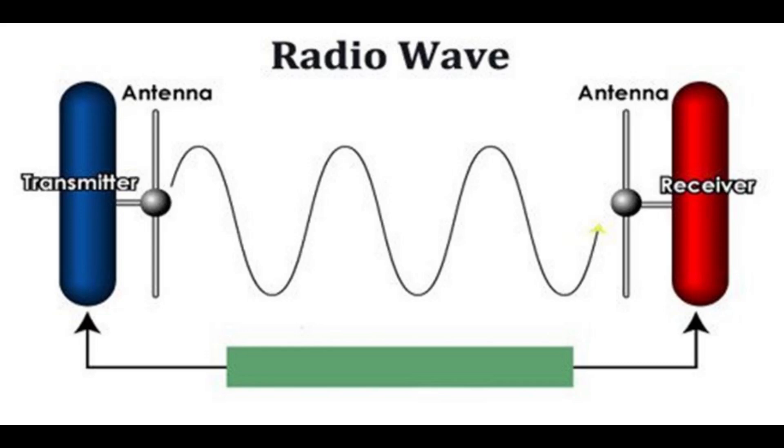The information, called the modulation signal, can be an audio signal representing sound from a microphone, a video signal representing moving images from a video camera, or a digital signal representing data from a computer.